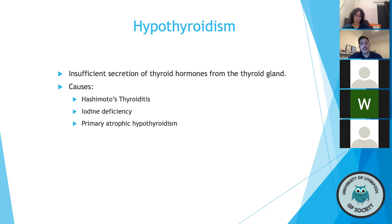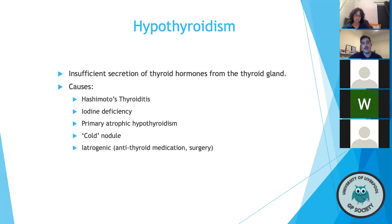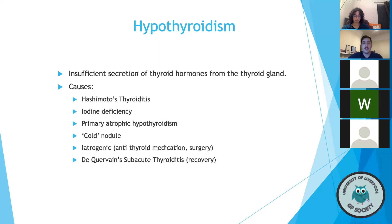Primary atrophic hypothyroidism is caused by diffuse lymphocytic infiltration of the gland and presents with hypothyroidism in the absence of a goiter — a classical exam story. A cold nodule, lacking the ability to secrete thyroid hormone, results in an overall decrease in secretion. Be aware of medications: carbimazole and propylthiouracil are antithyroid medications that can cause it, as can surgery. Amiodarone and lithium are commonly associated with hypothyroidism. De Quervain's subacute thyroiditis patients enter a hypothyroid state in the recovery phase.